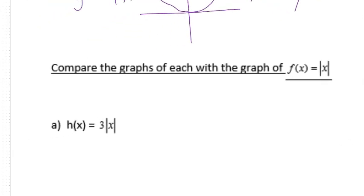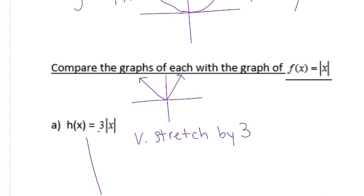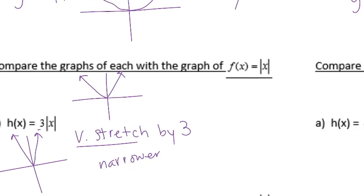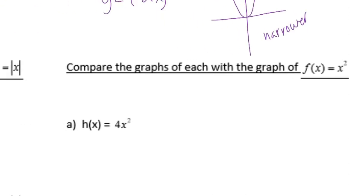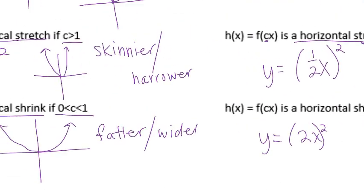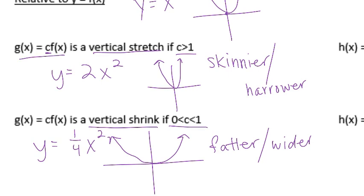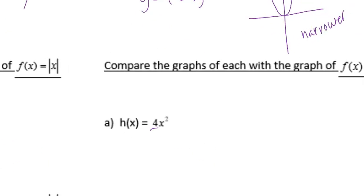Let's look at the absolute value function, which looks like a V. If I have 3 out front — not inside the absolute value — that's going to be a vertical stretch by 3, so it's actually going to be narrower. Vertical stretch means narrower. If we have 4 out front on a quadratic, like g of x, that's a vertical stretch by a factor of 4.